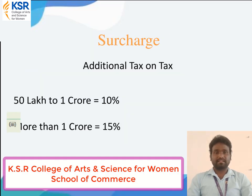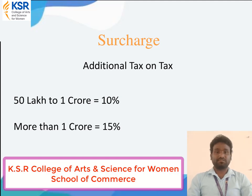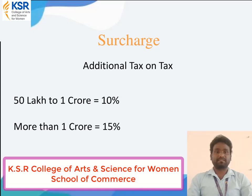The second element is surcharge. What is surcharge? It is nothing but additional tax on tax. Surcharge can only be charged by the central government — no one else has the right to levy it. The central government may increase the surcharge whenever there is a huge requirement of funds for the country, such as a natural disaster. Currently, if income is between fifty lakh and one crore, it attracts a surcharge of three percent. Above one crore, it is fifteen percent. The government may increase or decrease this as required.